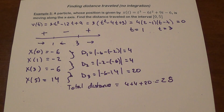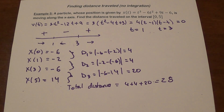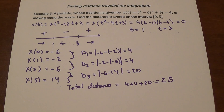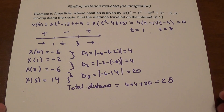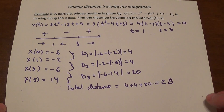To summarize the process: we need to see if the particle changes direction. If it does, we find the position at each point — both endpoints and each point where it changes direction. Then we calculate the distance traveled from one point to the next by subtracting the positions and taking the absolute value to make sure it's positive.